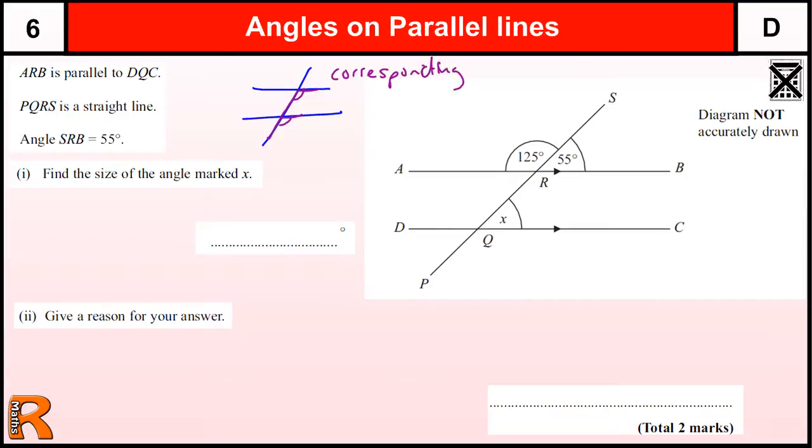We have the one where we get the Z shape. Now these can be back to front, upside down and stuff, so you'll be able to see that. Where we have the angles on either side, that's called alternate angles, and they're the same.